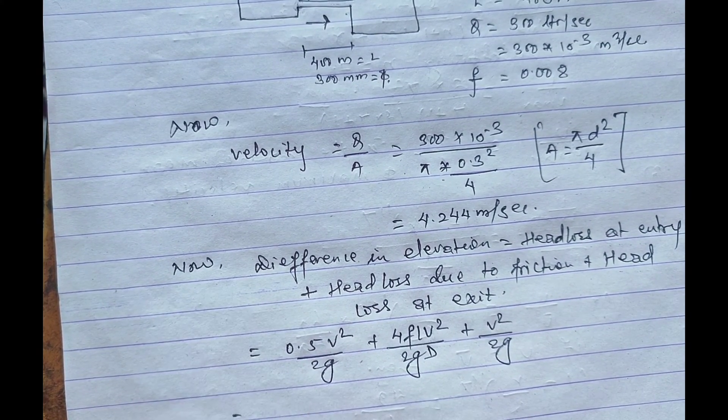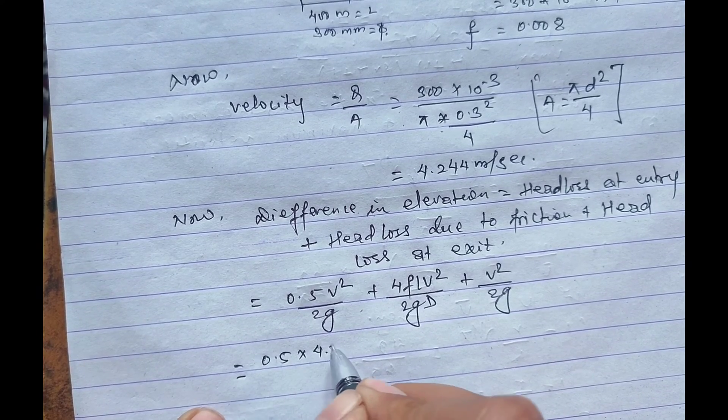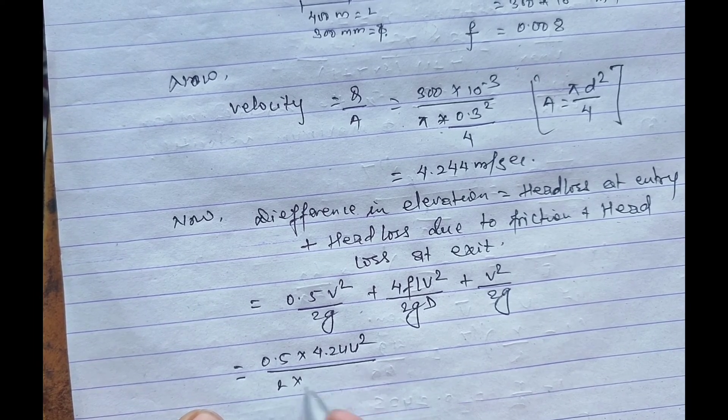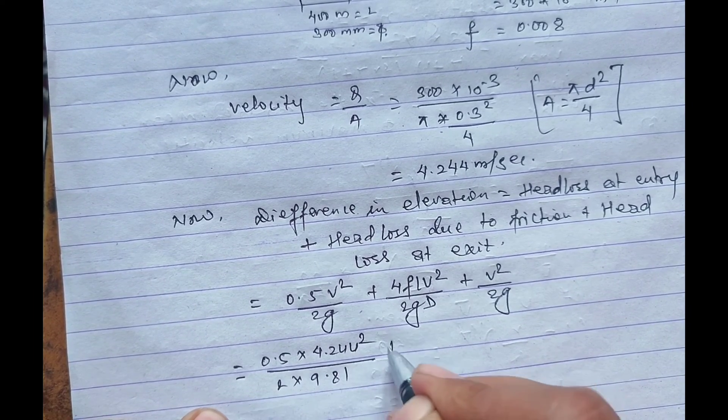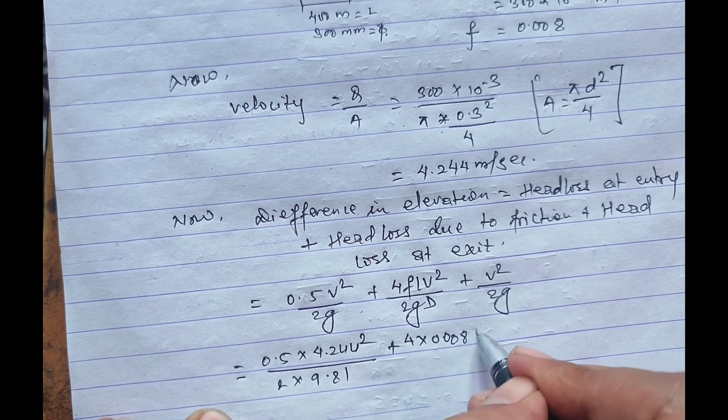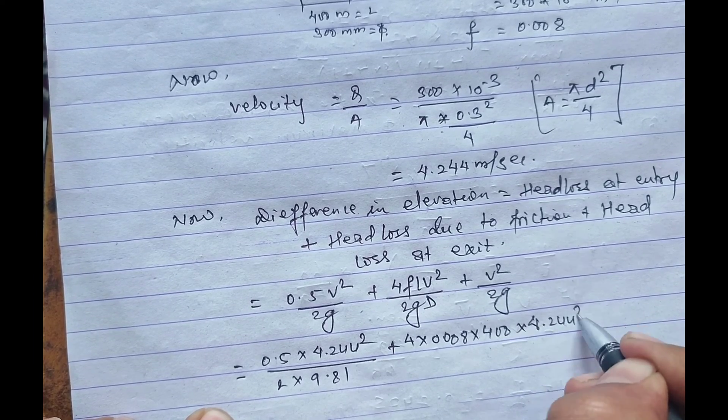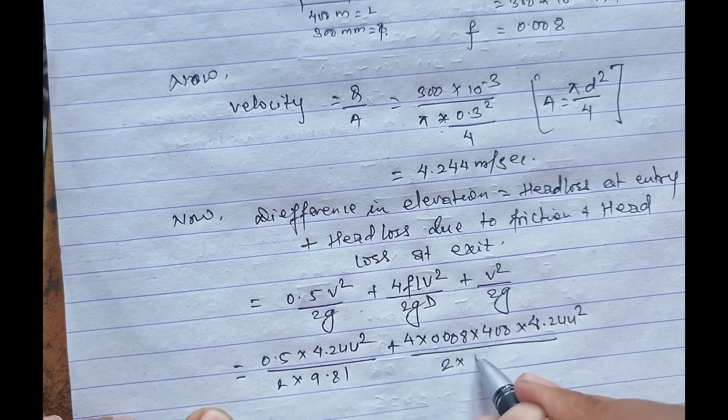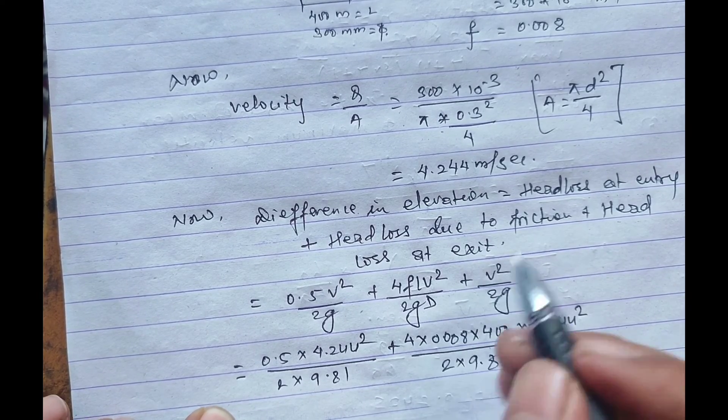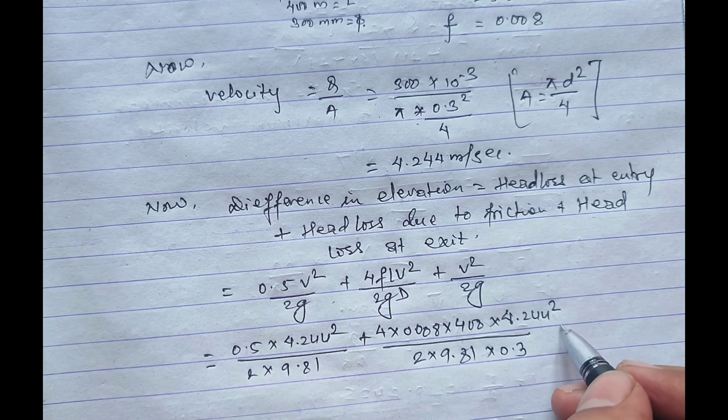So on placing the values in all this, we get 0.5 into 4.244 whole square divided by 2 into 9.81, plus 4 into 0.008 into 400 into 4.244 whole square by 2 into 9.81 into 0.3, as the diameter is given as 0.3 meter.